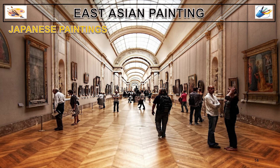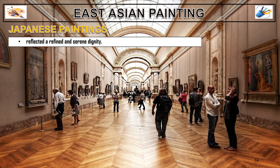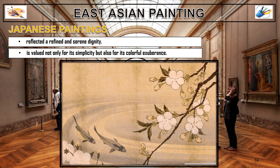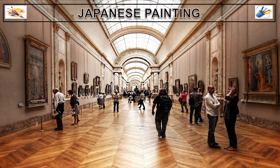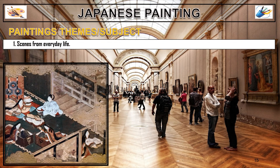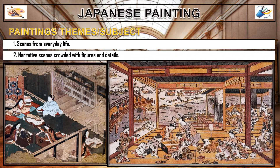For Japanese painting, it reflected a refined and serene dignity. It is valued not only for its simplicity, but also for its colorful observance. The Japanese painting subjects include scenes from everyday life, narrative scenes with crowded figures and details.